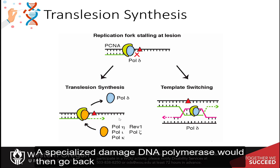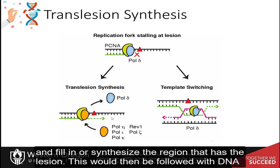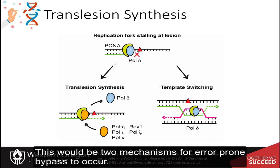A specialized damaged DNA polymerase would then go back and fill in or synthesize the region that has the lesion. This would then be followed with DNA repair. This would be two mechanisms for error-prone bypass to occur.